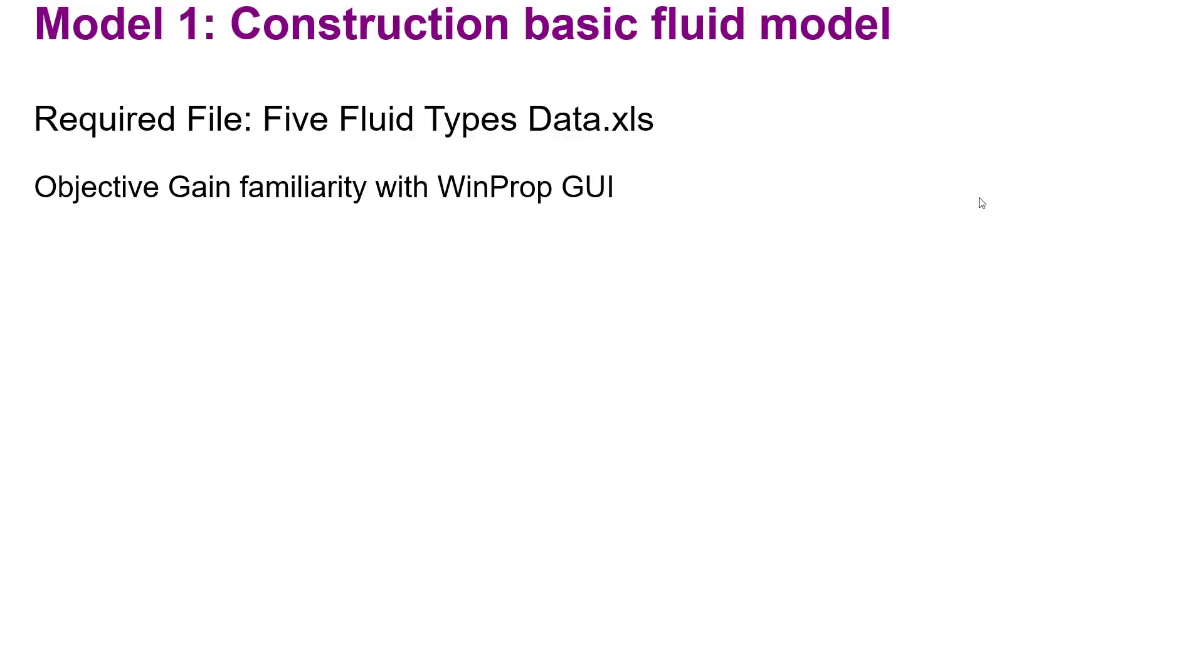Let's start with model number one, the construction basic fluid model. The required data set is the file Fluid Type Data .xls. I will reference this file in the course, and in this model construction I will help you gain familiarity with WinProp by step-by-step shortcuts of the software, making it easy to follow and build your own model.